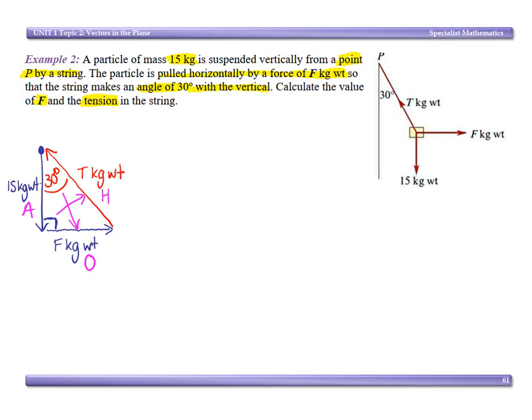So start with one of them. We have adjacent, so let's start with tension. So it's A over H. Cos theta is A over H.